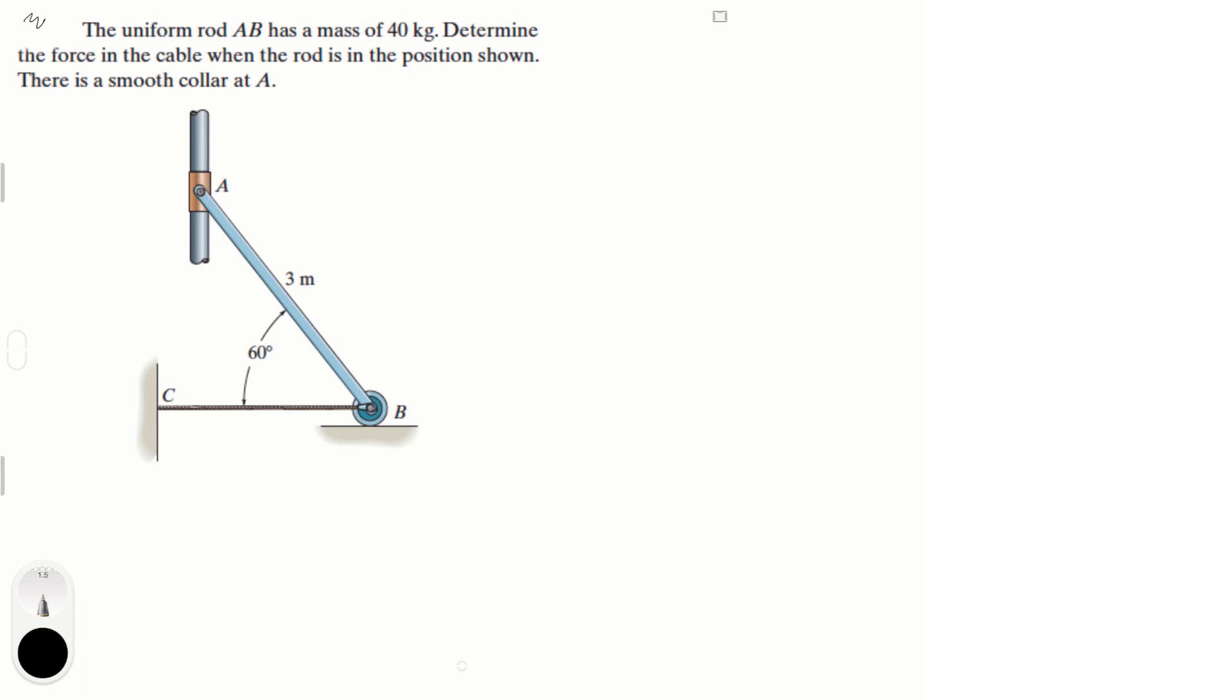So we have to first draw the free body diagram and all the forces reacting. We know we have a force going vertically here at B. There is no horizontal force at B because this is a wheel, it would just roll over.